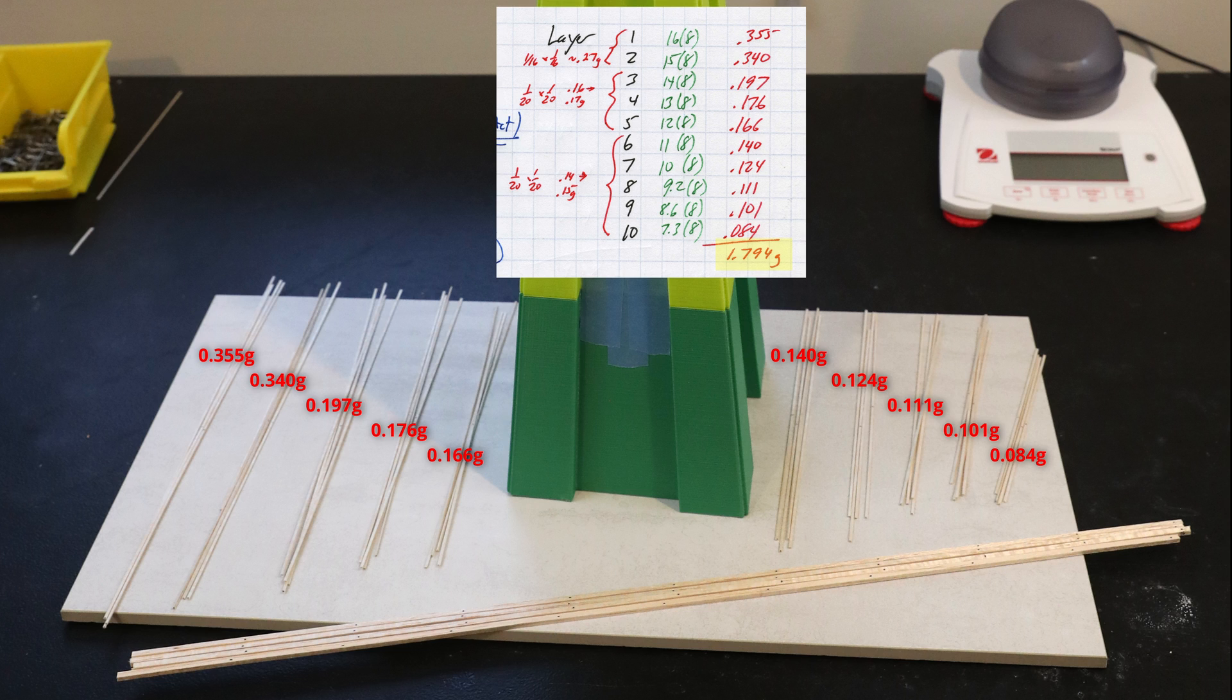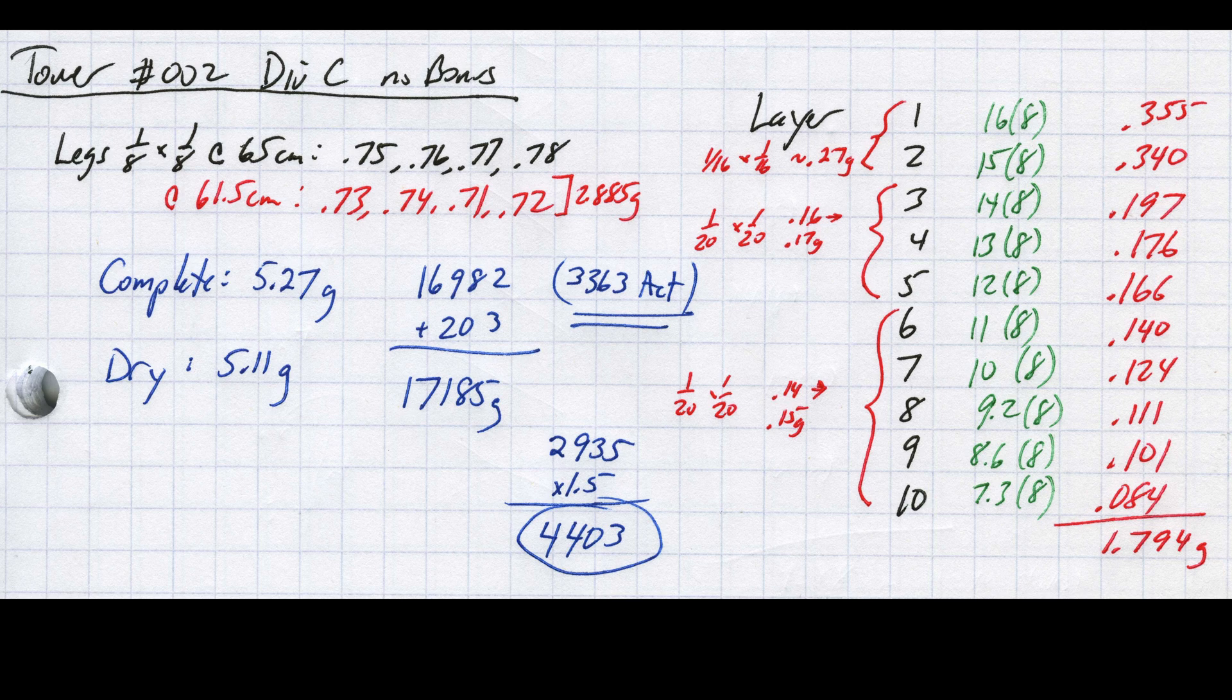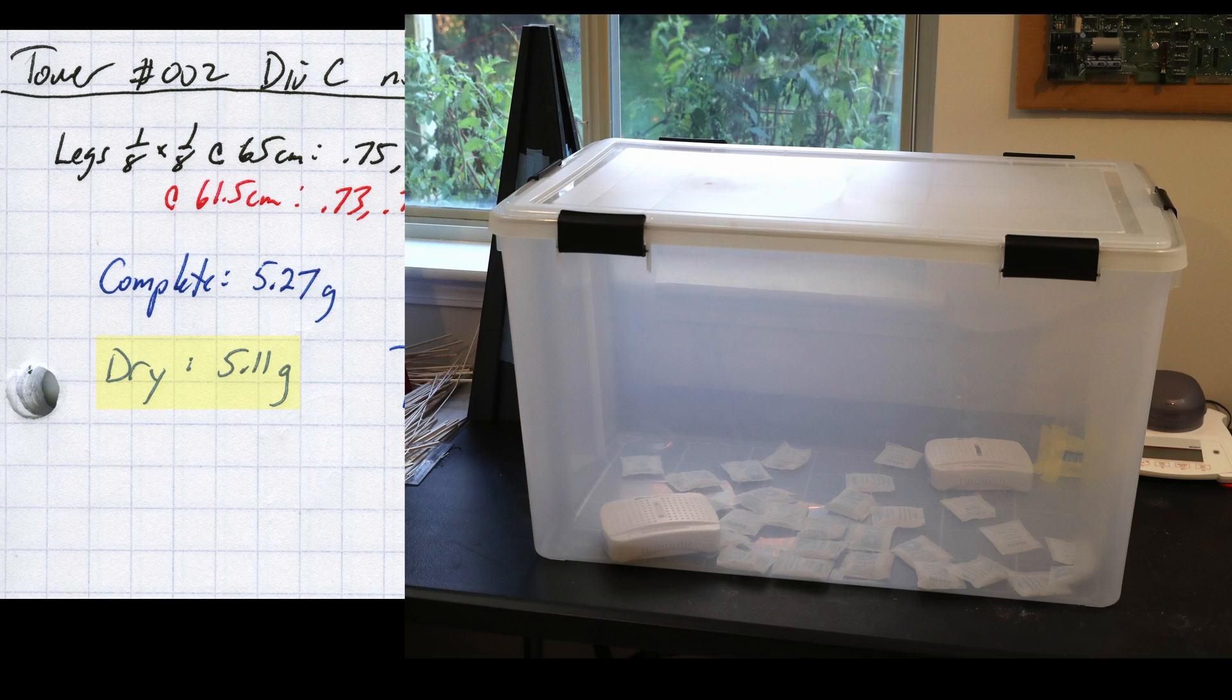I like to record the mass of the tower right after it's complete. This mass can vary depending on the relative humidity at the time. Here the tower weighed 5.27 grams. The dry value recorded here is the mass after the tower has been in the sealed dry box for at least 24 hours. You can watch my competition prep video to see why this step is very important.